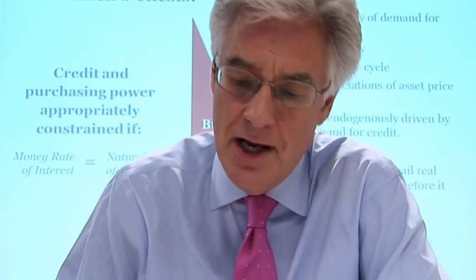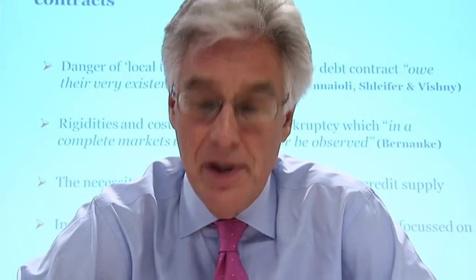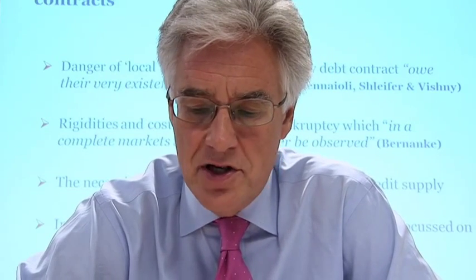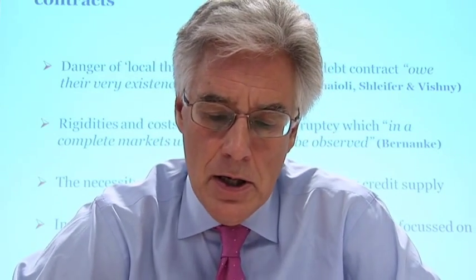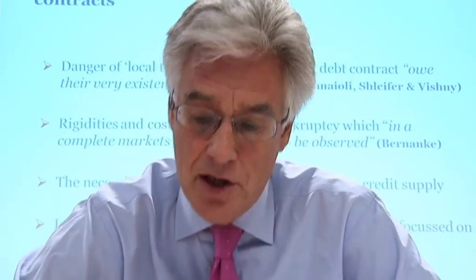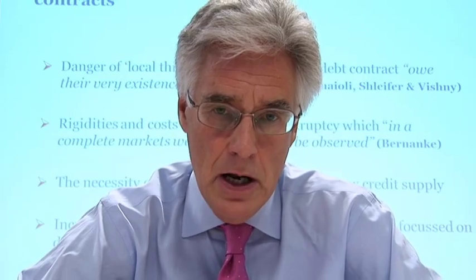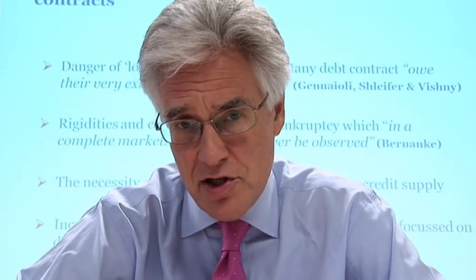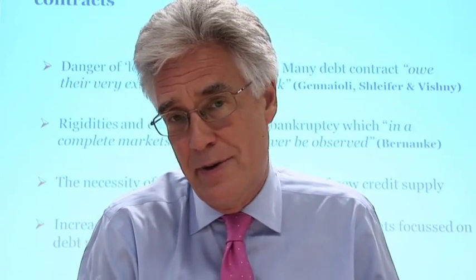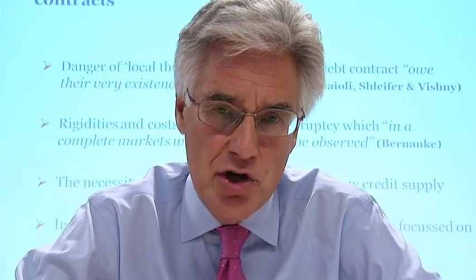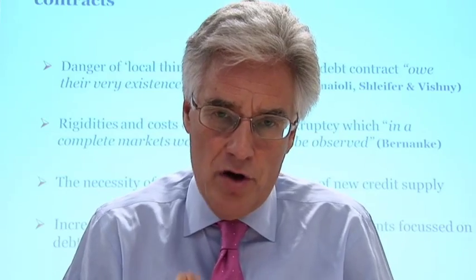Let me turn to my third category of arguments about why credit can create problems which go beyond those covered in price stability. These are the arguments which Irving Fisher and Henry Simons set out. The crucial point is that while credit creation creates purchasing power, it also creates ongoing debt contracts. And ongoing debt contracts create rigidities in the economy. Simons and Fisher believed that those rigidities were fundamental to the fact that a boom of excess leverage up to 1929, when it burst, had created the crash of 1929 and the Great Depression thereafter.